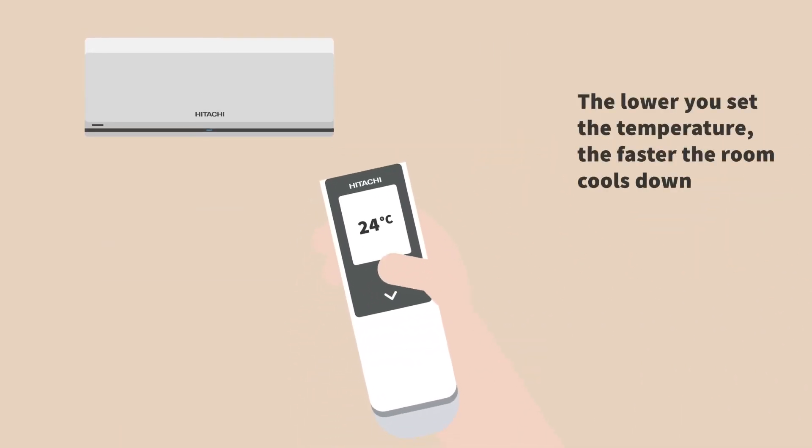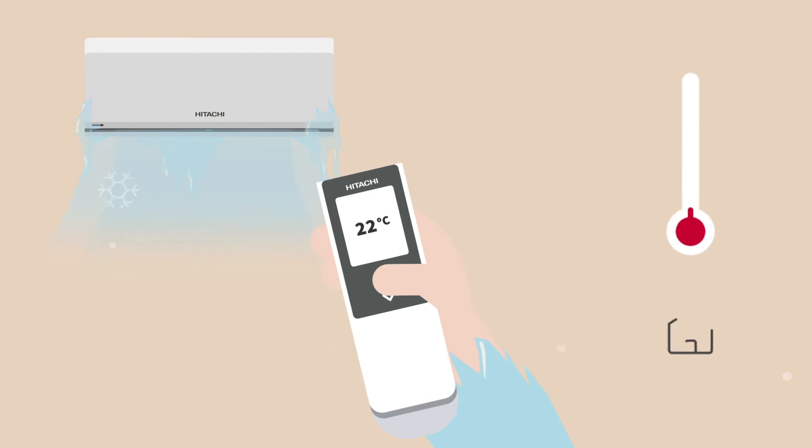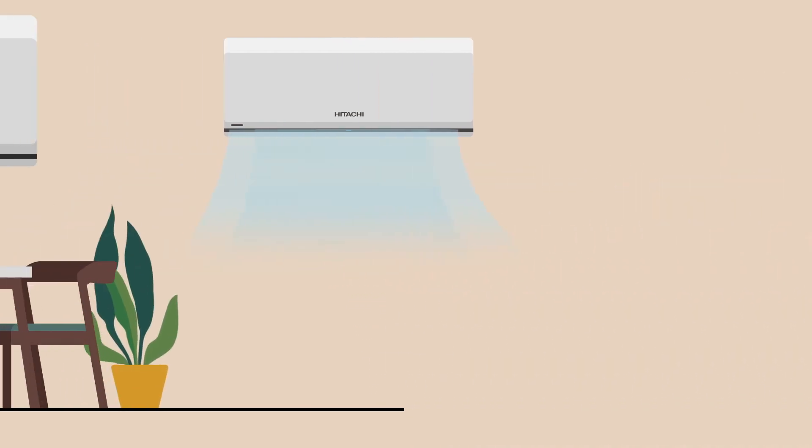The lower you set the temperature, the faster the room cools down. Though true, it's not healthy for the air conditioner. It puts stress on the system to maintain that lower temperature and creates an environment that is too cold for comfort. The perfect temperature is always reached gradually.